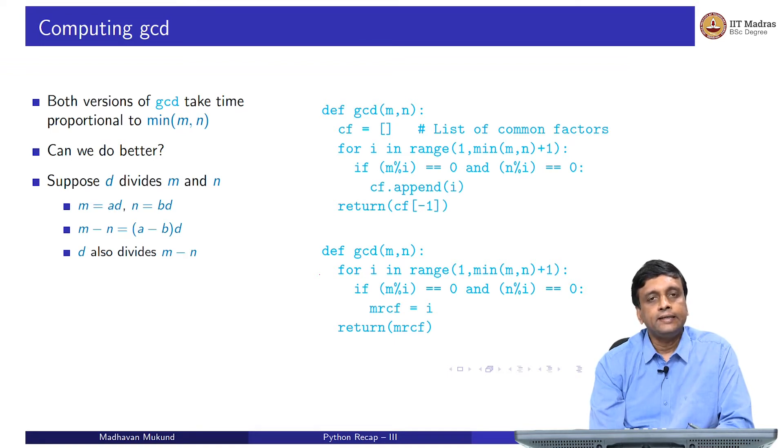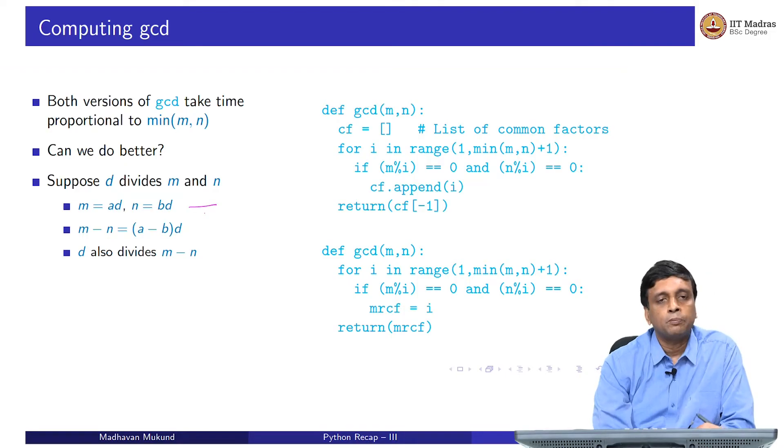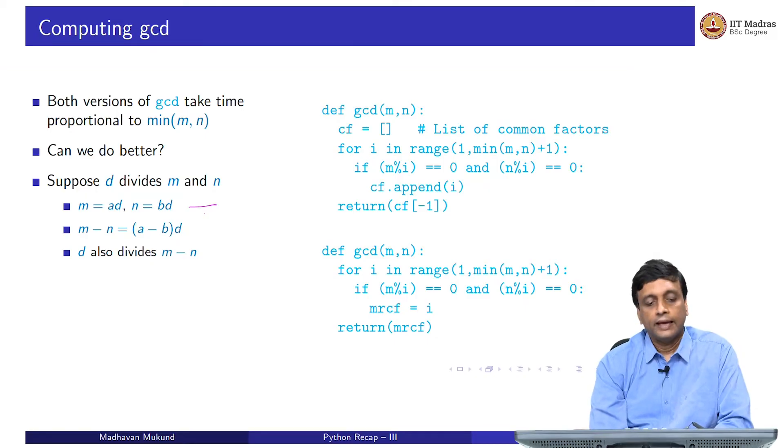Suppose D is indeed a common factor of M and N. D divides M and D divides N, that means I can write M as a multiple of D, some A times D and N is also a multiple of D, some B times D. M and N are both multiples of D because D by assumption is something that divides both M and N. But now let me look at M minus N, then with some very simple algebra, you can say that M minus N is AD minus BD and therefore, it is A minus B times D.